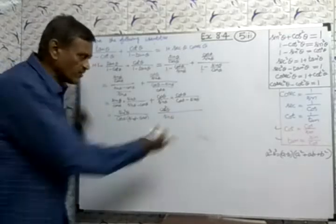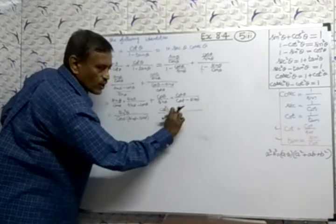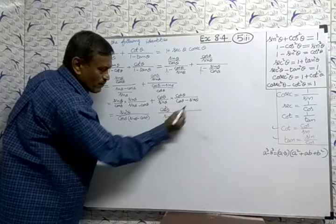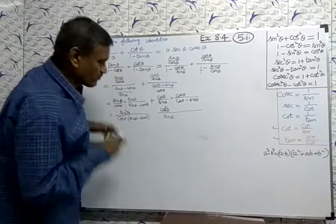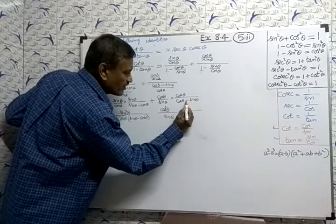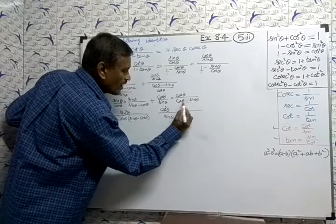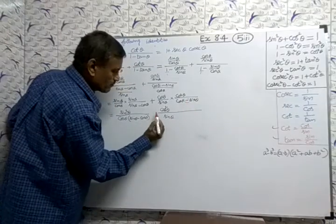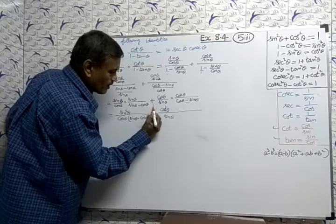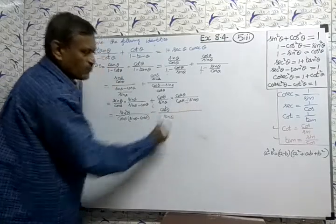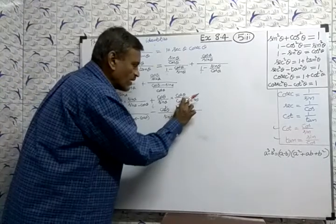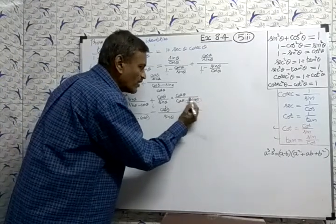I want to change the second denominator so that sine comes to the front and cos goes to the back. So I take the minus sign out, changing (cos theta minus sine theta) to minus (sine theta minus cos theta). Because of this sign change, the plus between the two terms becomes minus.